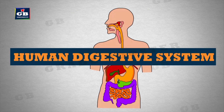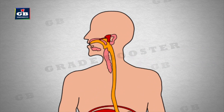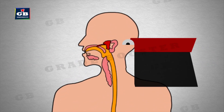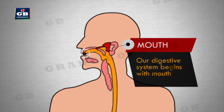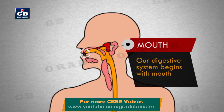Let us see the structure and functioning of different parts of human digestive system. Our digestive system begins with the mouth. Teeth, tongue and salivary glands help in chewing and swallowing of food.